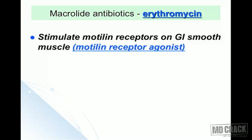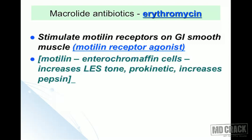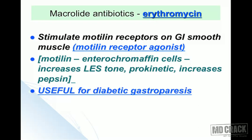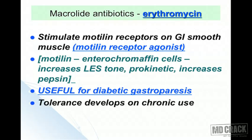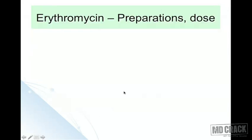An important additional mechanism of erythromycin: it stimulates motilin receptors on gastrointestinal smooth muscle, acting as a motilin receptor agonist. Motilin is secreted by enterochromaffin cells, increases the tone of the lower esophageal sphincter, produces a prokinetic effect, and increases pepsin. This property can be used for managing diabetic gastroparesis, though tolerance develops with chronic use.